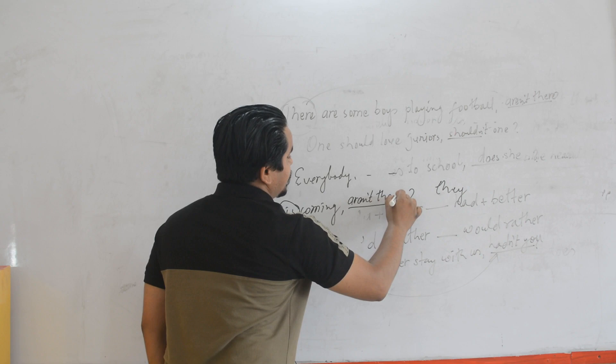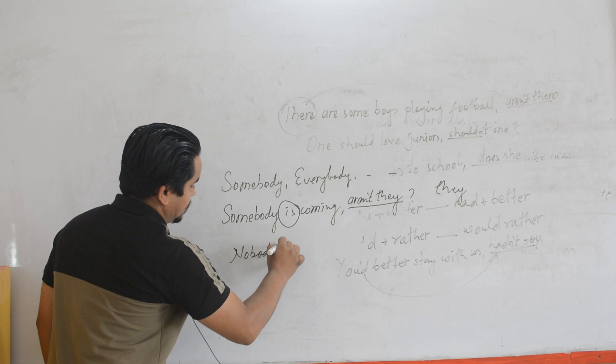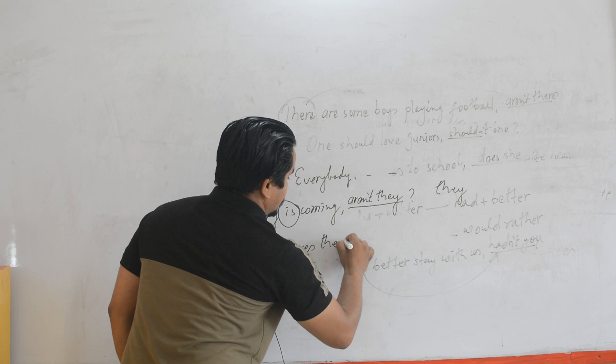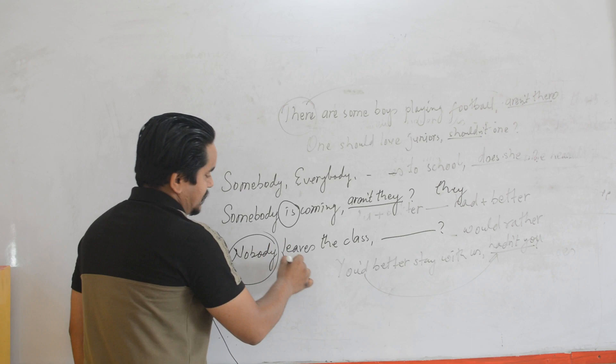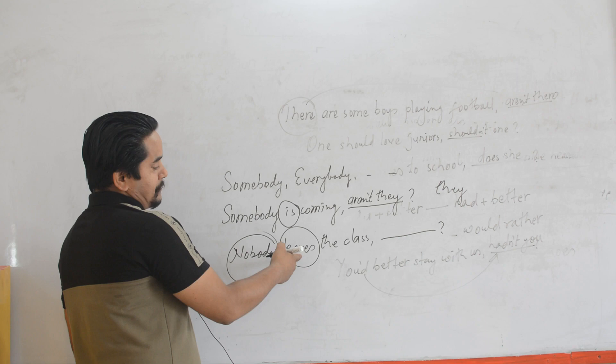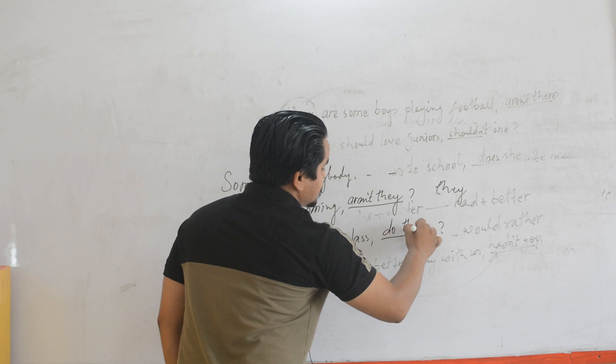Likewise: 'Nobody leaves the class.' Since 'nobody' makes the sentence negative, the verb is in V1 form. The subject of the question tag is 'they'. Although it is V1 form here, what do you have to agree with? You use 'do'. So the question tag is 'do they?' This is the way you form the question tag.